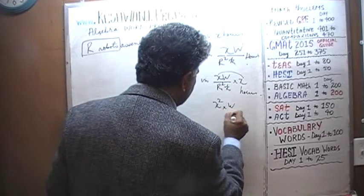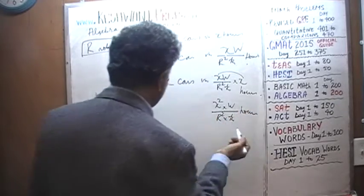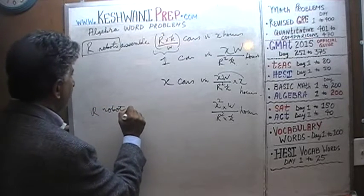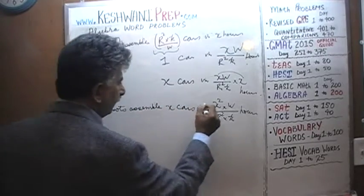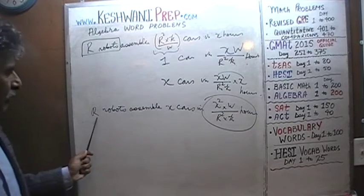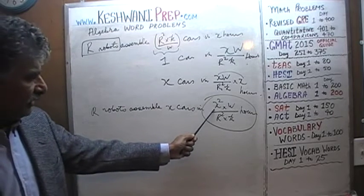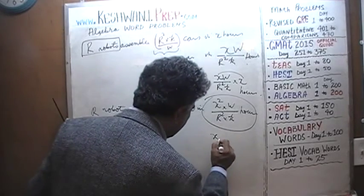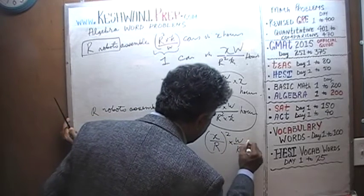For X cars, multiply the time for one car by X. That gives X times W over R squared k times X hours, which is X squared times W over R squared times k hours. So the R robots can assemble X cars in X²W/(R²k) hours — or equivalently, (X/R)² times W/k hours. That is exactly what we were looking for.